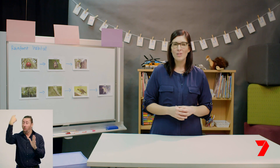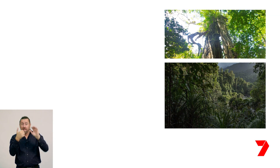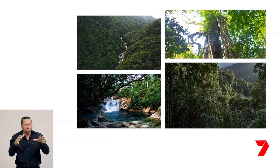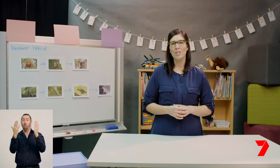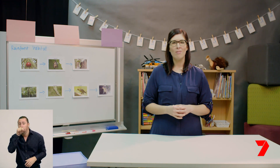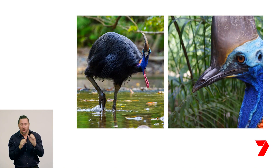The rainforest runs from Cooktown to Townsville and is made up of dense, lush, warm forests with trees that reach over 60 metres high, as well as gorges, rivers, and spectacular waterfalls. This World Heritage listed site is home to a diverse range of wildlife, including mammals like possums, tree kangaroos, and bats, as well as birds, insects, reptiles, frogs, and of course trees and ferns. It is also home to the cassowary, which is the world's heaviest flightless bird.